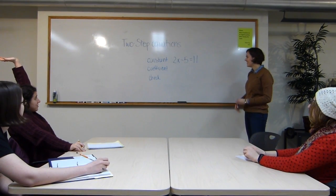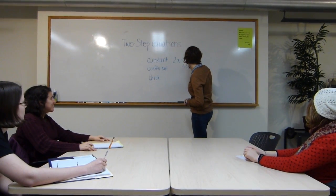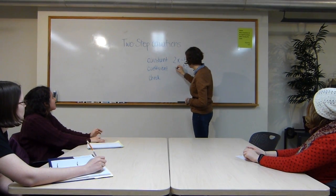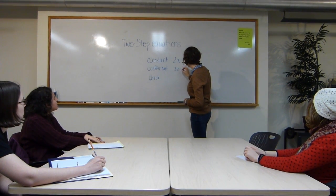Add 5. Thanks, Gracie. Exactly. So we're performing the opposite and adding 5 to both sides. And that leaves us with 2x is equal to 16.